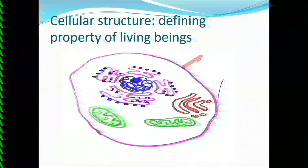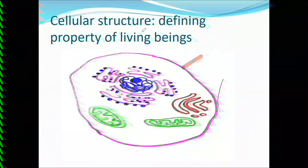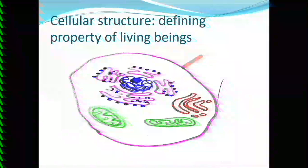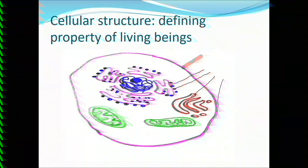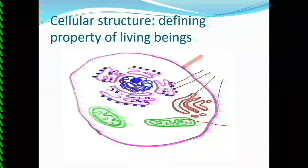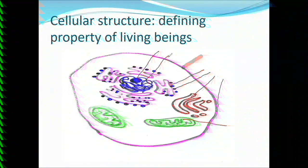This structure is the cell membrane. Then this is the endoplasmic reticulum. These bead-like structures are ribosomes. This is the Golgi body. This is mitochondria. And then this is the nucleus. Inside the nucleus there is this dark body which is called the nucleolus. And this thread-like network is known as chromatin.